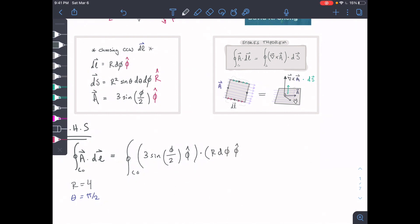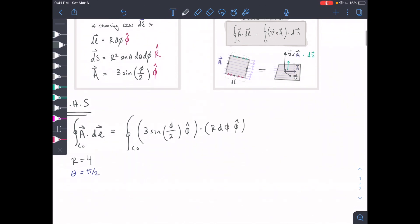Just to recap again: phi hat dot phi hat is equal to 1. These directional unit vectors, if we dot them with each other, equal 1.